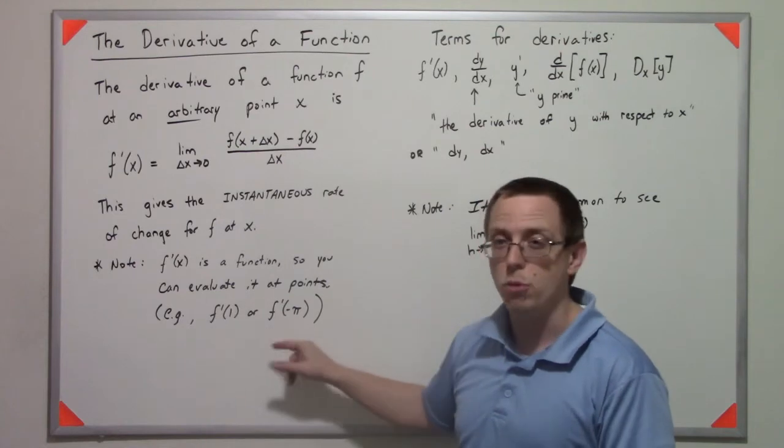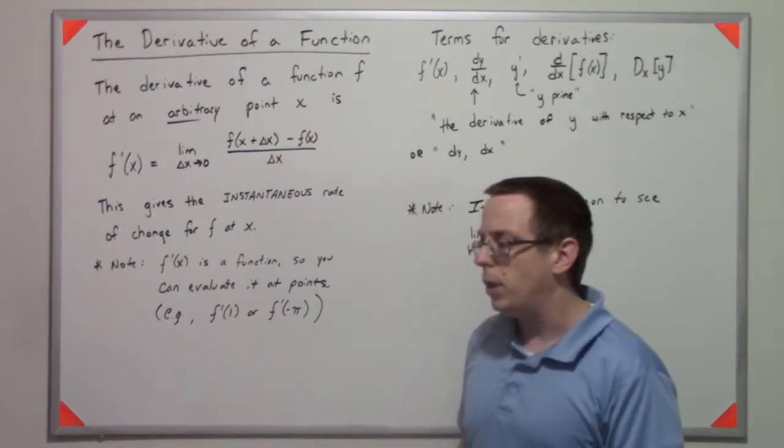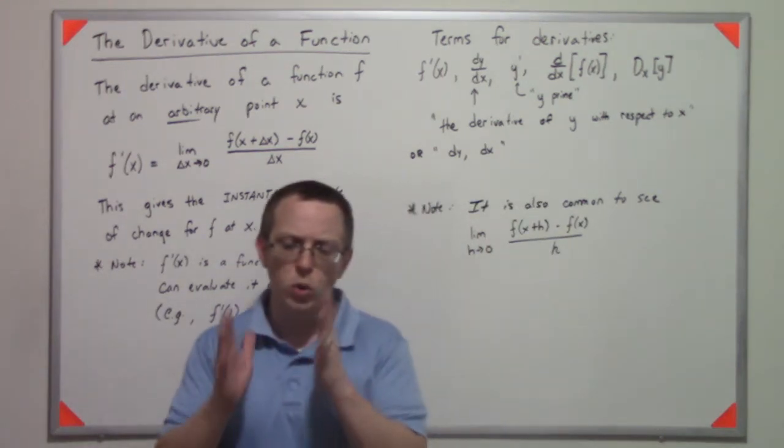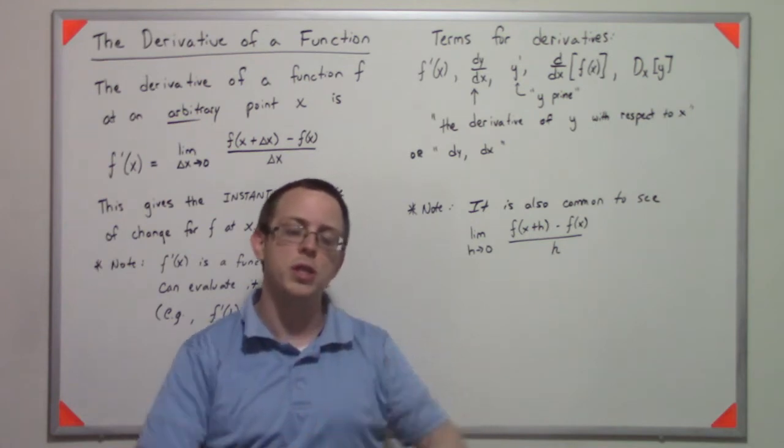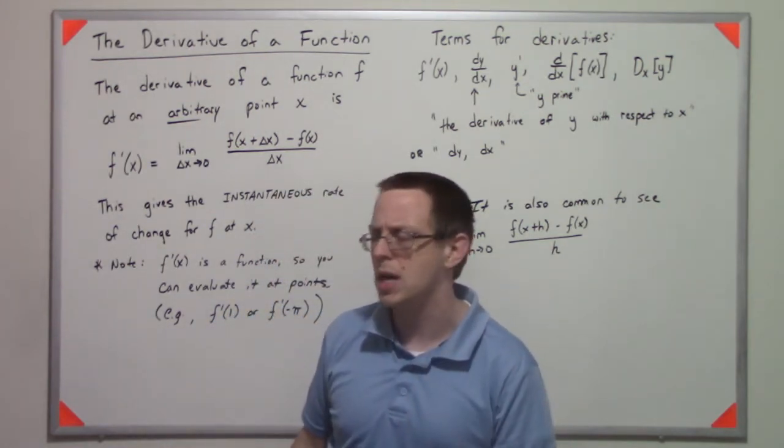Technically, these will have a domain, so you'd have to watch out. You can't just throw any number into it. But for what we're trying to do here, the goal is to generate a function that we can plug numbers into as opposed to having to take a limit every single time.